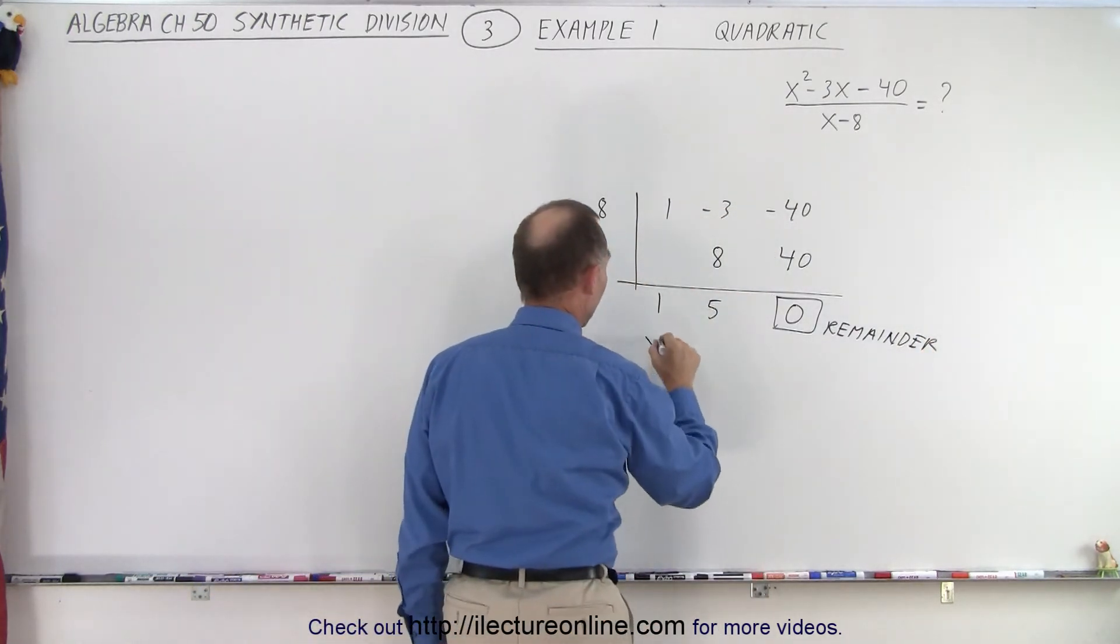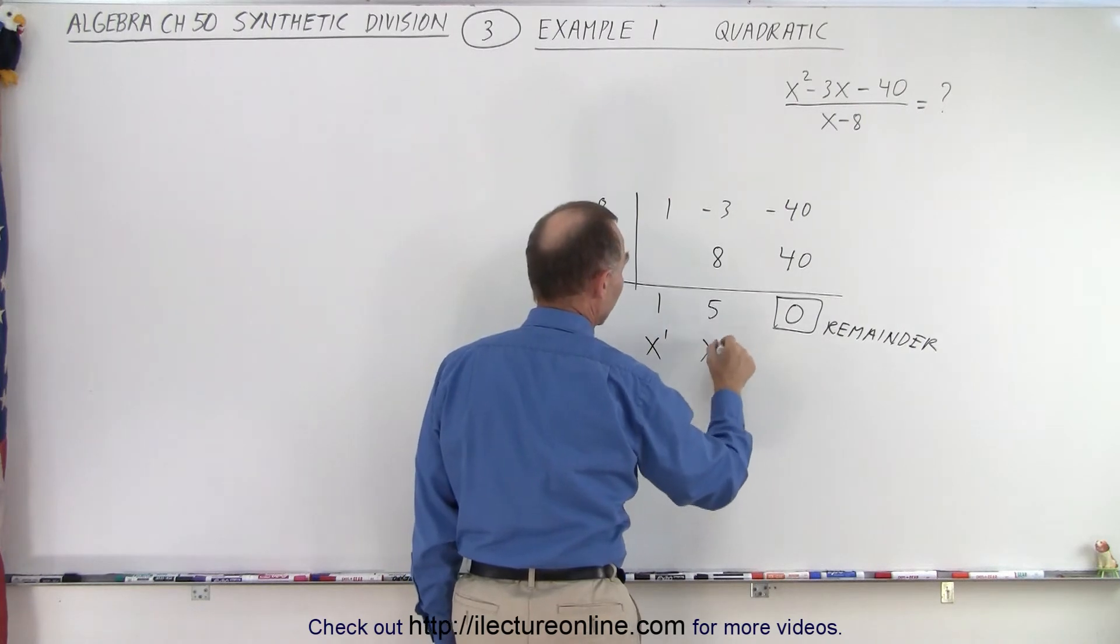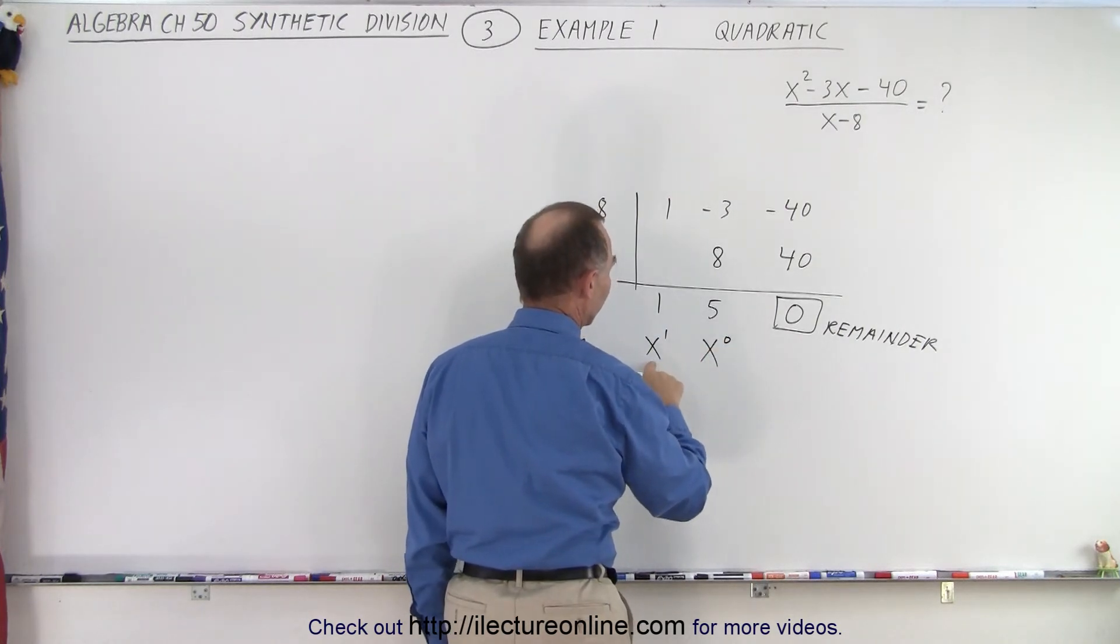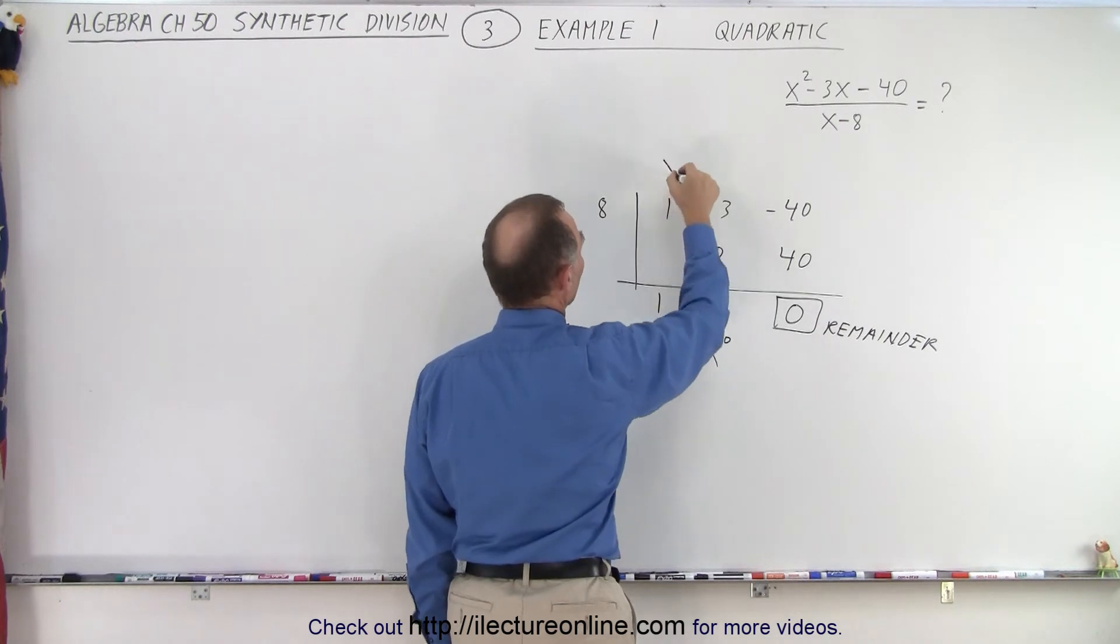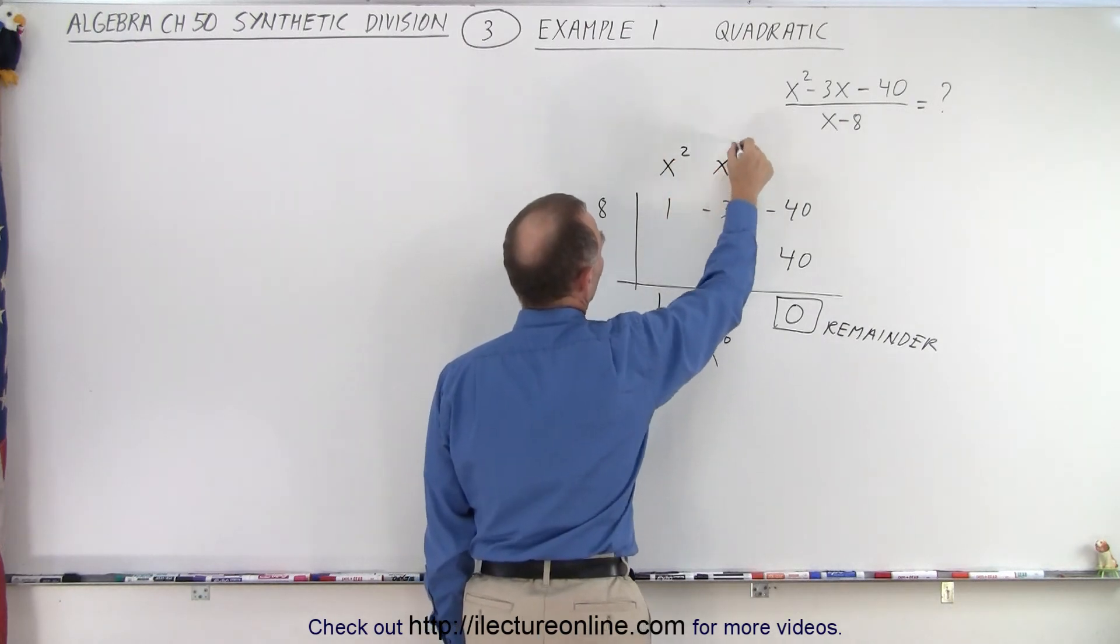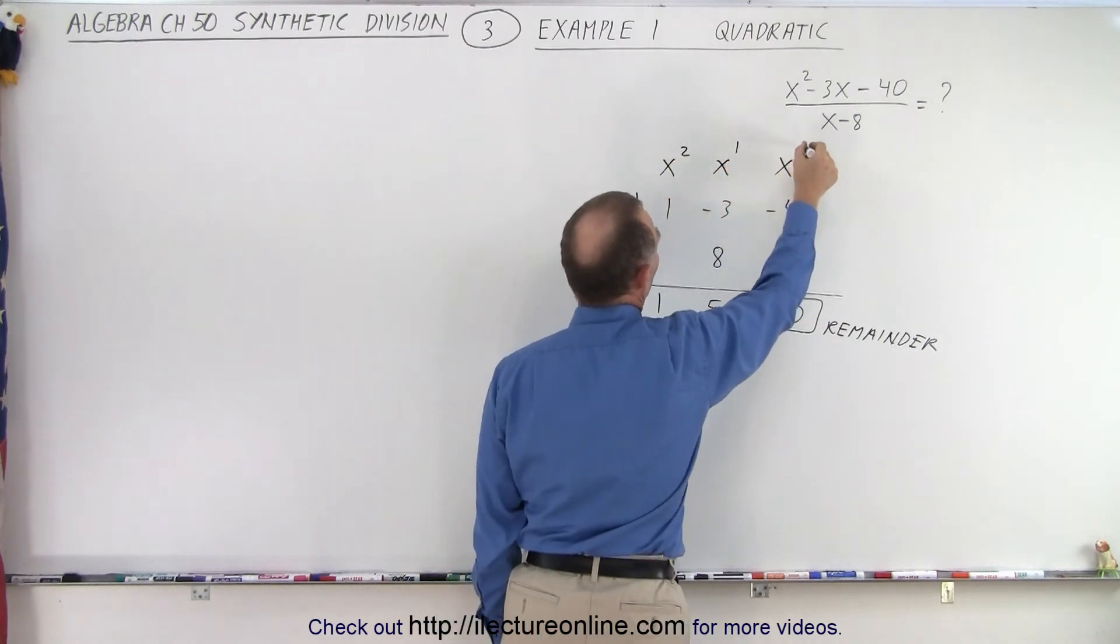This number here represents x to the first power. This represents x to the 0 power. Why x to the first power? Because here we have a quadratic equation where this was x squared. This was x to the first and this x to the 0.